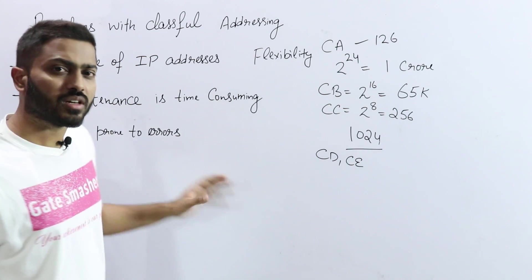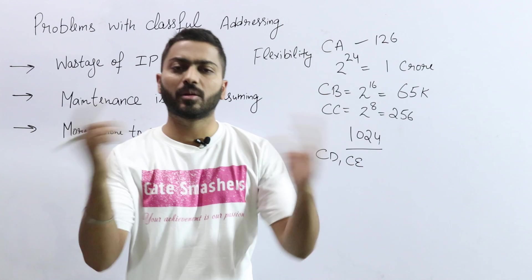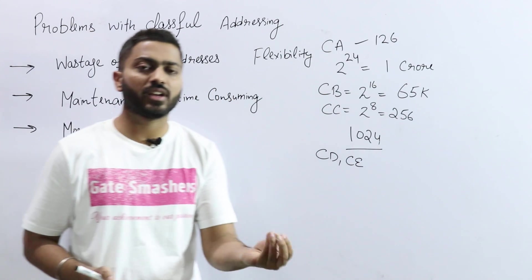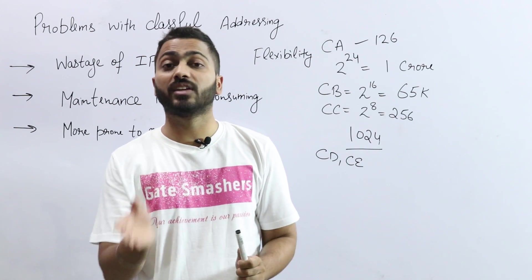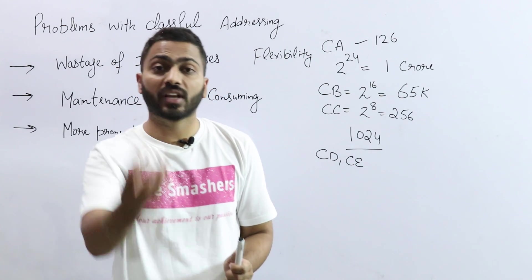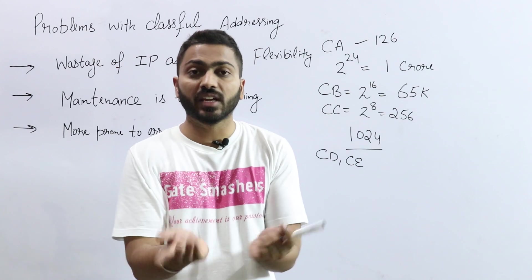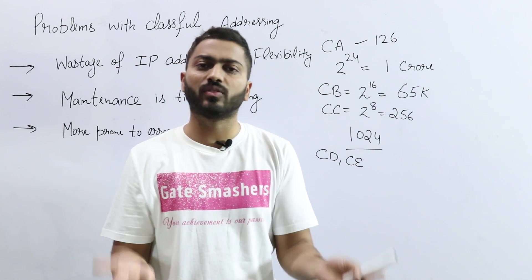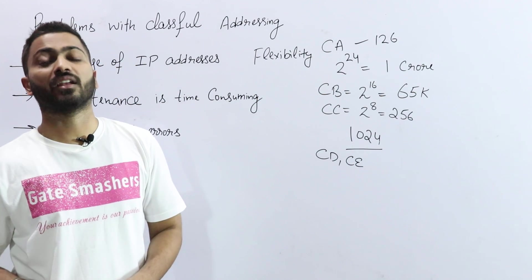More prone to errors. Again, the same problem - if there is such a big network, if any problem occurs, any hardware or software failure problem occurs, it is very difficult to track first. And after tracking, to fix that problem, it will be very time consuming. And in a big network, obviously there will be more chances of errors.